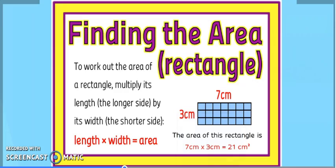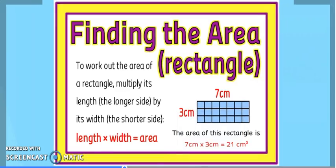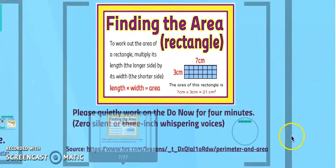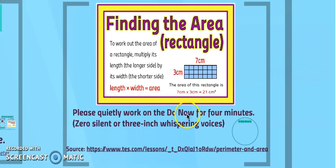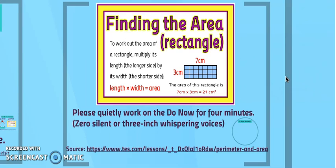We're going to leave this picture up here, but we're going to ask you to quietly work on the do now for 4 minutes with zero or 3-inch whispering voices. What we're going to do is pause this video, and then after 4 minutes, we will play this video again.